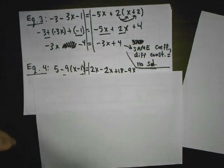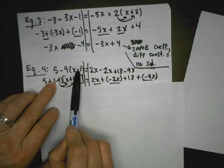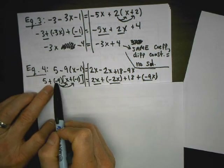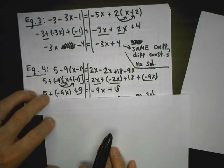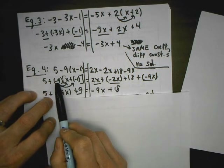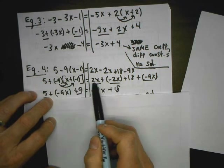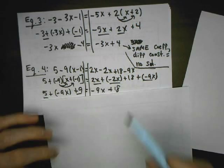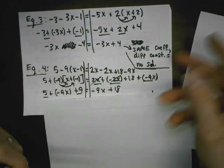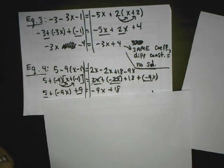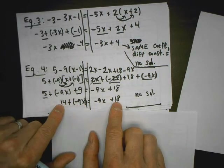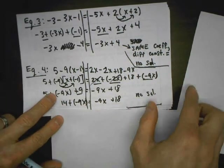Let's check equation four. I do the rule for subtraction and add the opposite on both sides, then distribute negative nine: negative nine times x is negative nine x, negative nine times negative one is positive nine. On the other side, I combine like terms — two x plus negative two x are opposites and cancel out, leaving negative nine x. Then five plus nine is fourteen. I see the same coefficient and different constants — that's no solution. So equations three and four have no solution.